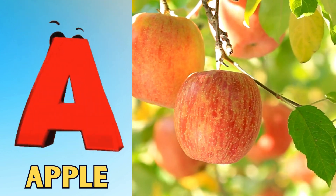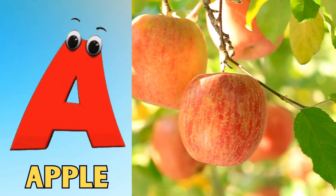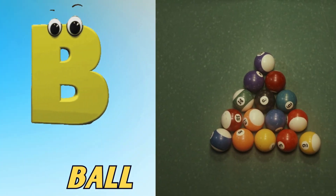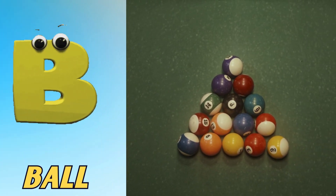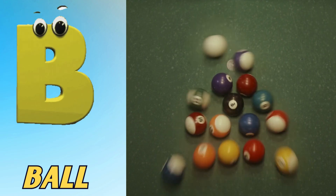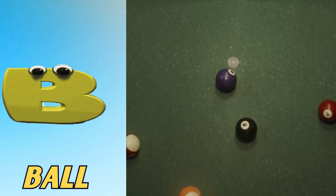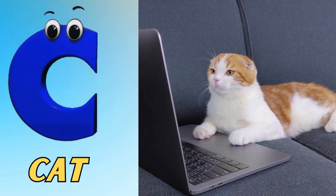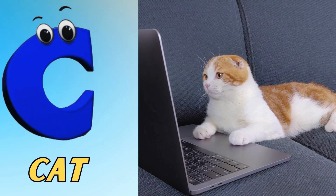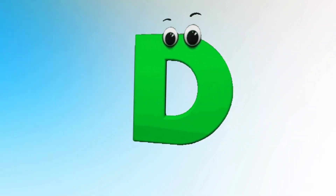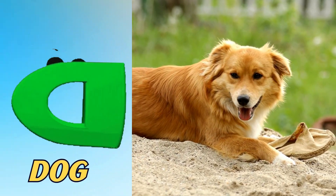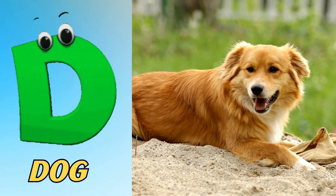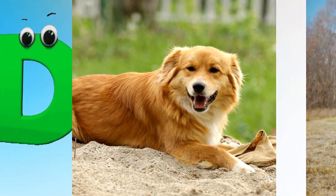A is for apple, a-a-apple. B is for ball, b-b-ball. C is for cat, c-c-cat. D is for dog, d-d-dog.